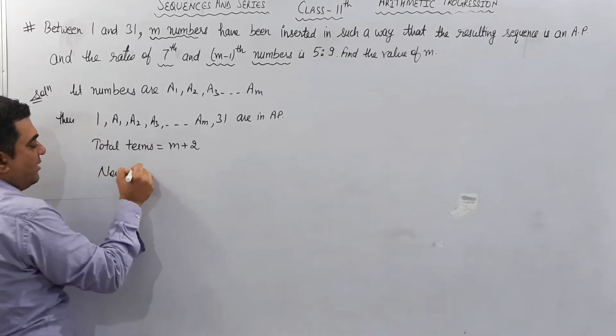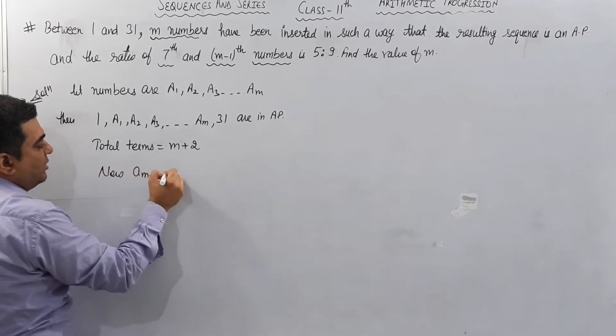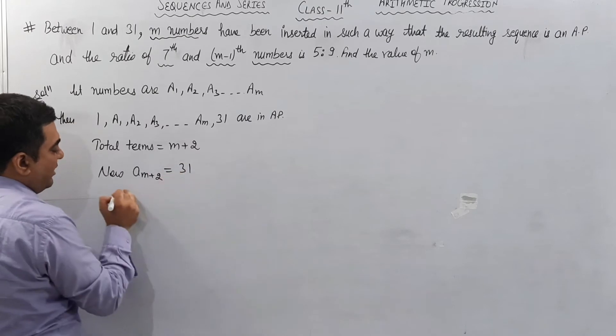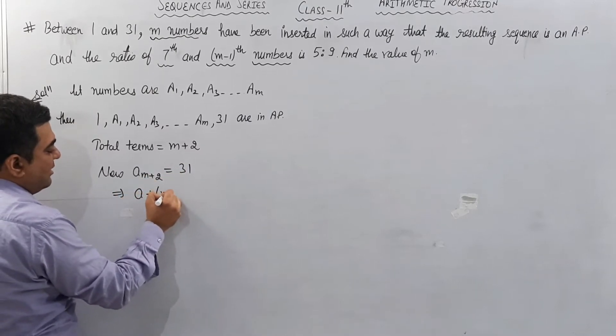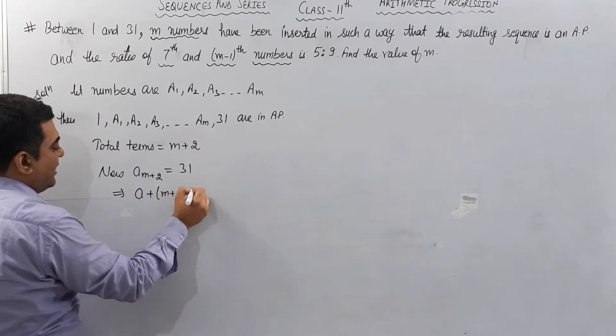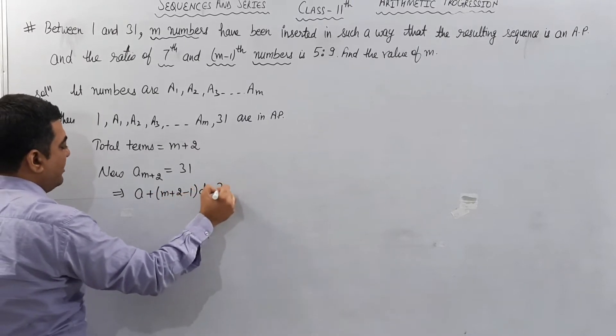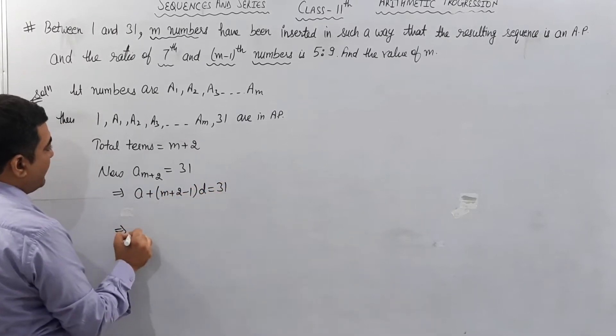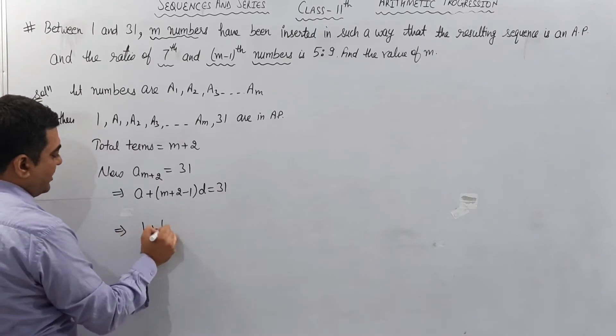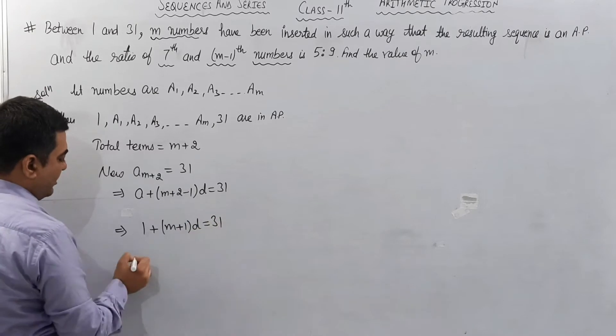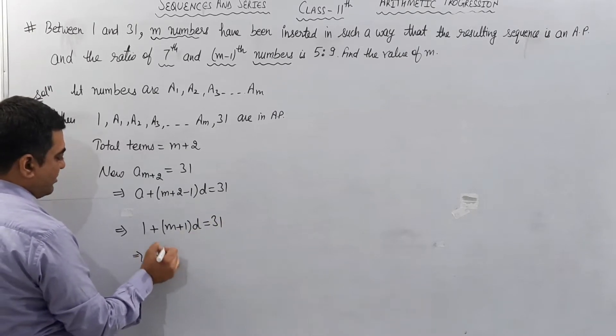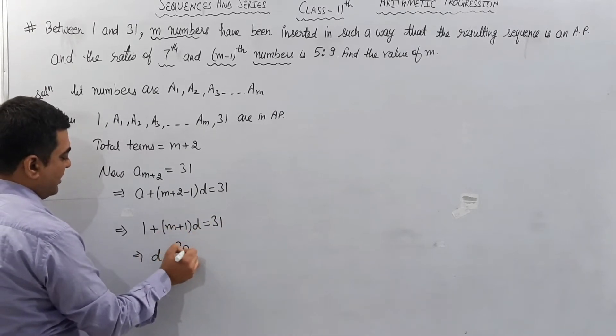Then we can write a_(m+2) equals 31. Apply the nth term of AP: a plus (n-1)d. Then a plus (m+2-1)d equals 31. Value of a is 1, so 1 plus (m+1)d equals 31.